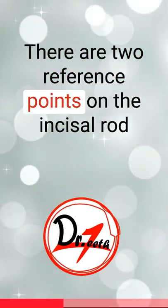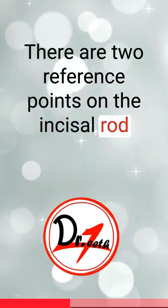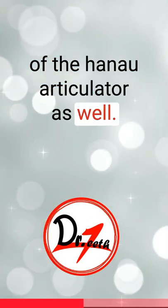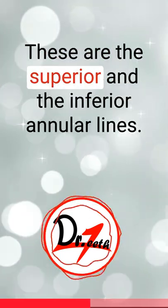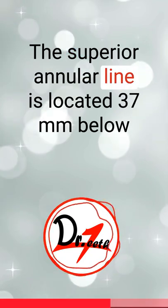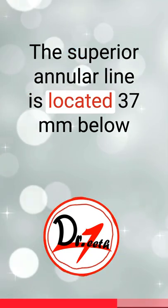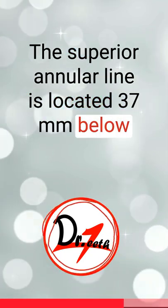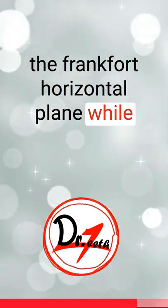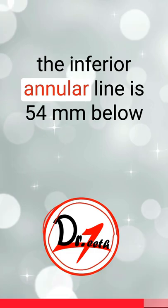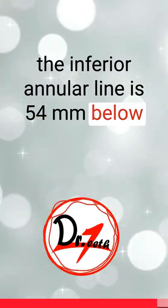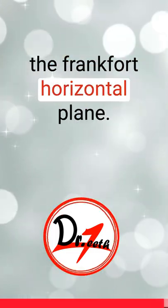There are two reference points on the incisal rod of the Hano articulator as well. These are the superior and the inferior annular lines. The superior annular line is located 37 millimeters below the Frankfurt horizontal plane, while the inferior annular line is 54 millimeters below the Frankfurt horizontal plane.